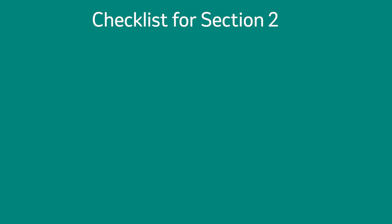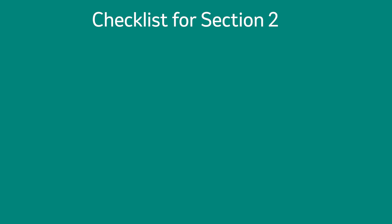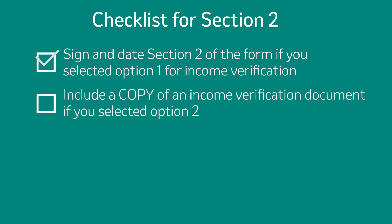Here is a checklist for Section 2. Did you sign and date Section 2 if you selected Option 1 for income verification? Did you include a copy of an income verification document if you selected Option 2?